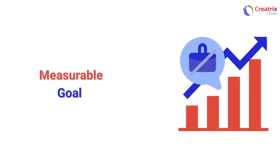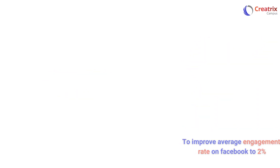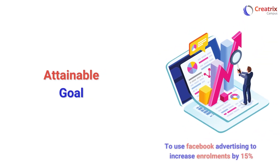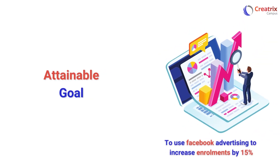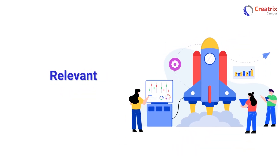Your measurable goal can be: we will improve our average engagement rate on Facebook to 2%. Your attainable goal can be: using Facebook advertising as a medium, we will use Facebook advertising to increase enrollments by 15%.